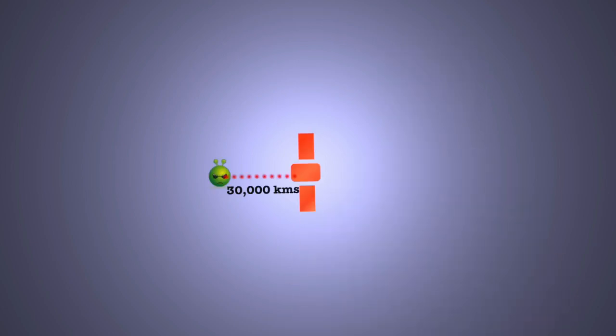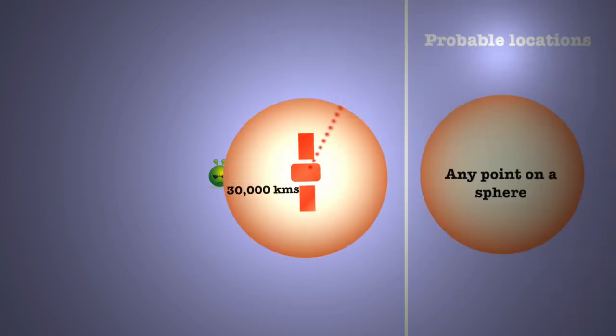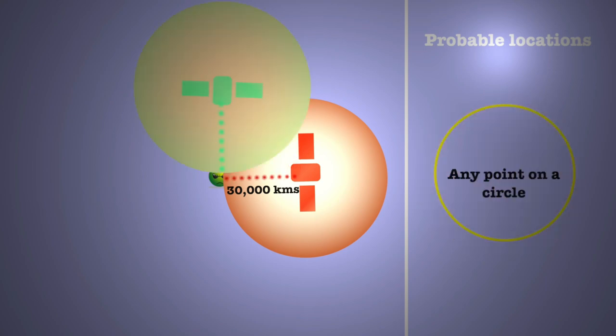Now the GPS works by trilateration, or by using intersecting spheres. One satellite tells you that you're 30,000 kilometers away from it. Since we are working in three dimensions, you could be anywhere on the sphere that I've drawn on the screen. Add one more satellite, you get another sphere, and now the possible locations are down to a circle.